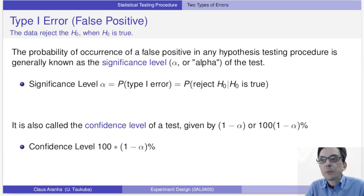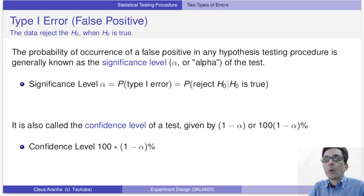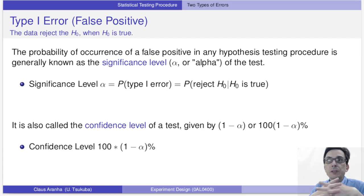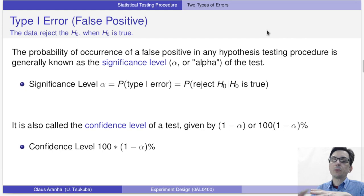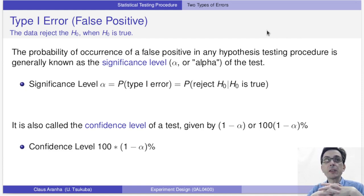Type 1 error happens when your estimate tells you to reject the null hypothesis while the null hypothesis is true. Type 1 error is a false positive kind of error. We describe the probability of a Type 1 error as alpha. Sometimes we also say that alpha is the significance of the test, and we can also say that the test has a confidence of 1 minus alpha percent.